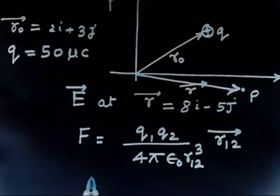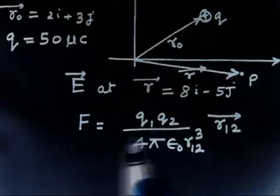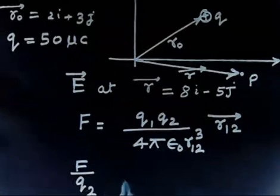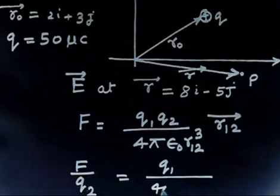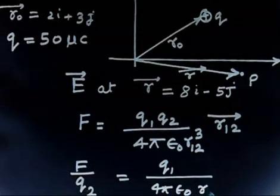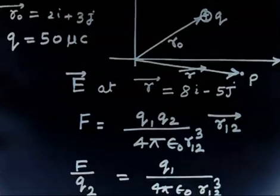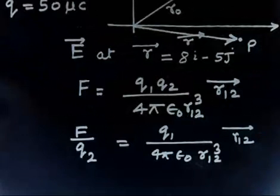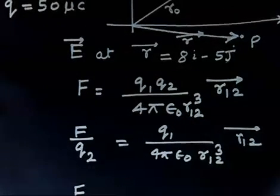So if I want to find electric field, I can write F by q2. And q2 I can take that as a test charge. q1 by 4πε0r12³ and then vector r12. So this is electric field. F by q2 is electric field.